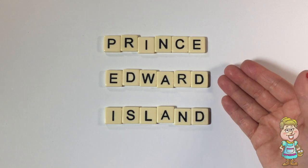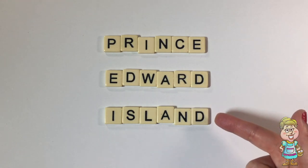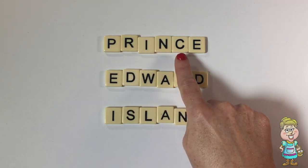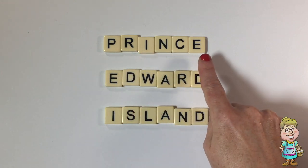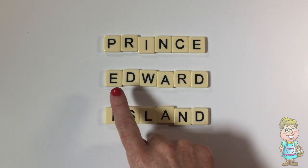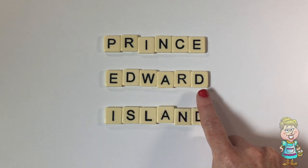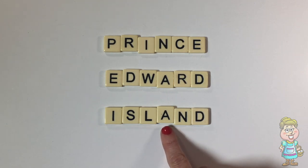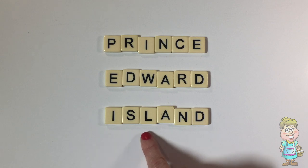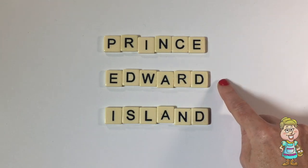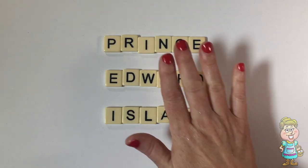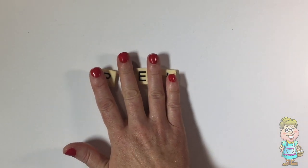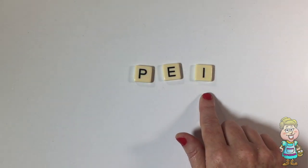This province has three words, and each of the words is six letters long. The first word is P-R-I-N-C-E, Prince. The second word is E-D-W-A-R-D, Edward. And the third word is I-S-L-A-N-D, Island. Prince Edward Island. To shorten it, you will use this abbreviation, P-E-I, Prince Edward Island.